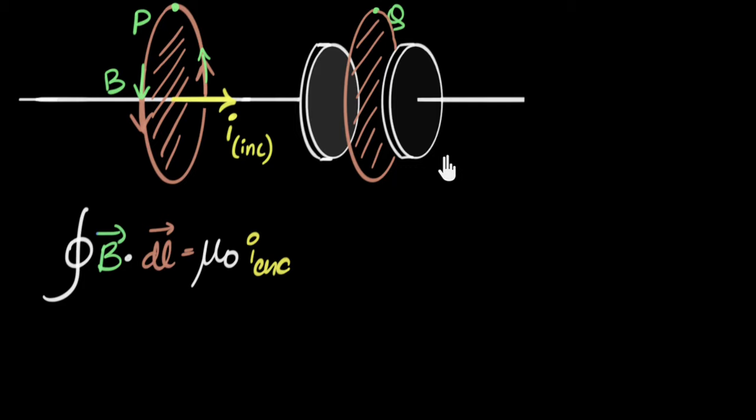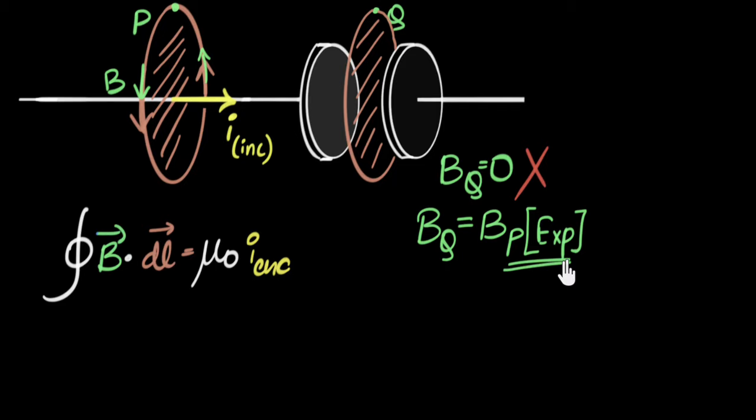Magnetic field according to Ampere's law at point Q is zero. And that's the problem because experiment says that's wrong. According to the experiment, magnetic field at point Q is pretty much the same as magnetic field at point P. That's what experiments tell us. And that is the problem with Ampere's law. So you can see there is some problem with Ampere's law because it's not giving us the right answer in this situation. So there's some fundamental problem with it.